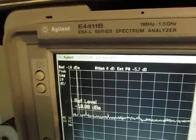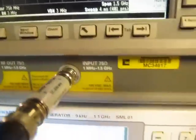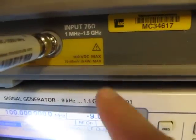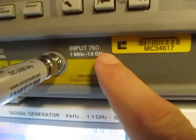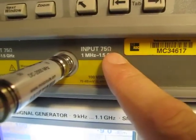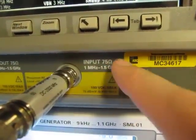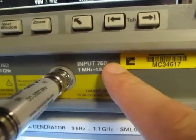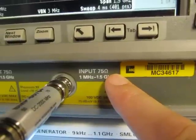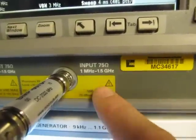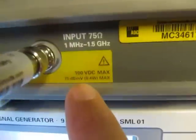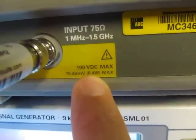Now the spectrum analyzer I'm using up here, this Agilent E4411, is a little bit unusual in two respects. One is that it has a 75 ohm input impedance. Most spectrum analyzers have got a 50 ohm input impedance. I've got this one inexpensively because it has this less popular, less desirable in my mind, 75 ohm input. But also what's unusual with this one is that it will tolerate up to 100 volts DC maximum.